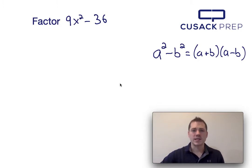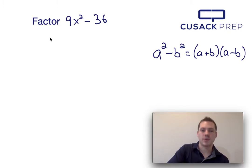Well the first thing I notice about 9x² - 36 is that there are two perfect squares, but I also notice that there's actually a greatest common factor. Because both 9 and 36 are divisible by 9, I can start this by taking out a 9 from both terms.